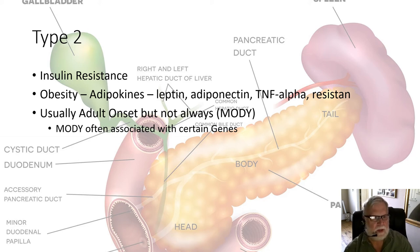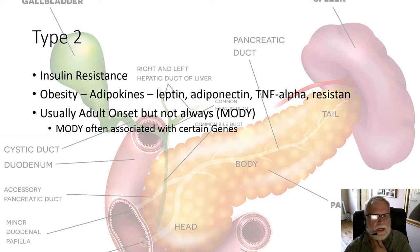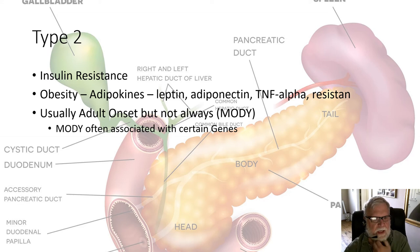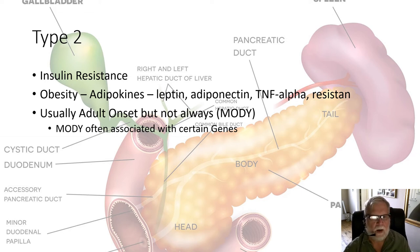Most people with type 2 diabetes are adults, but we're seeing more and more adolescents. This is called MODY — maturity-onset diabetes of the young. It is often associated with certain genes and is becoming progressively more common.